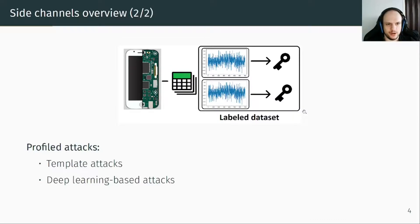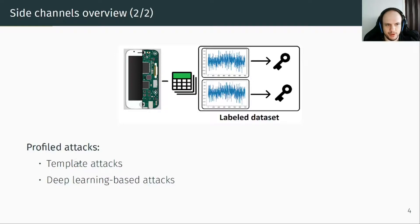Secondly, the attacker can acquire a labeled dataset. A labeled dataset is a dataset composed of a set of traces with their corresponding key. When an attacker has a labeled dataset, he can mount more powerful attacks called profile attacks. The profile attack consists in estimating the leakage model and then using it to guess the key on the target device. The two main profile attacks are template attacks and more recent attacks based on deep learning. In our work, we focus on the profiling attack with deep learning techniques and aim to overcome the data limitation.